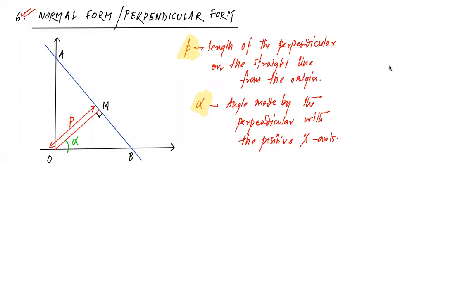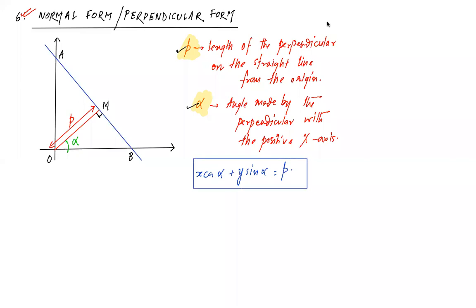This time the parameters are quite different — neither a point, nor a slope, nor an intercept, but two new things not learned in Class 10. When the length of the perpendicular on the straight line from the origin is given, and the angle made by that perpendicular with the x-axis is given, the required equation is: x·cosα + y·sinα = p. Box this equation — it is the normal form or perpendicular form of a straight line.